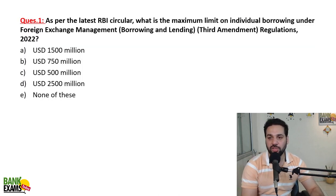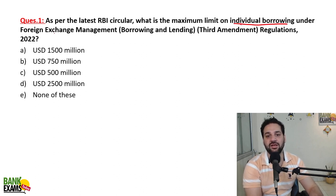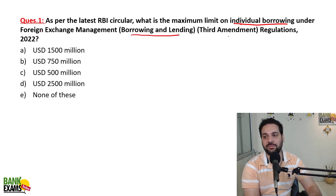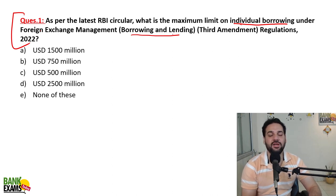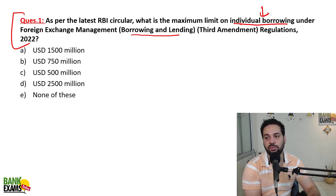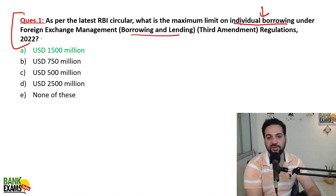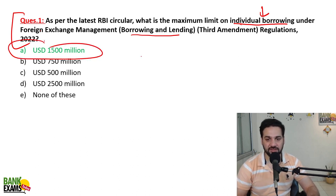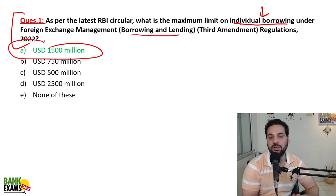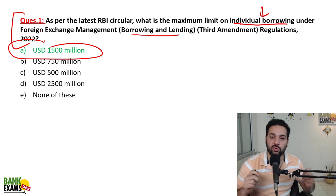As per the latest RBI Circular, what is the maximum limit on individual borrowing under the Foreign Exchange Management Borrowing and Lending Third Amendment Regulation 2022? Under FEMA's borrowing and lending regulation 2022, the individual borrowing quota has been raised to 1500 million US dollars. That used to be 750 million, but now temporarily it has been increased to 1500 million.